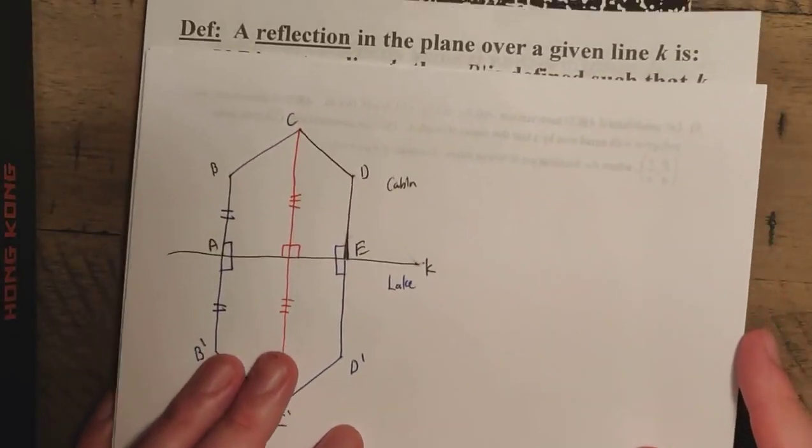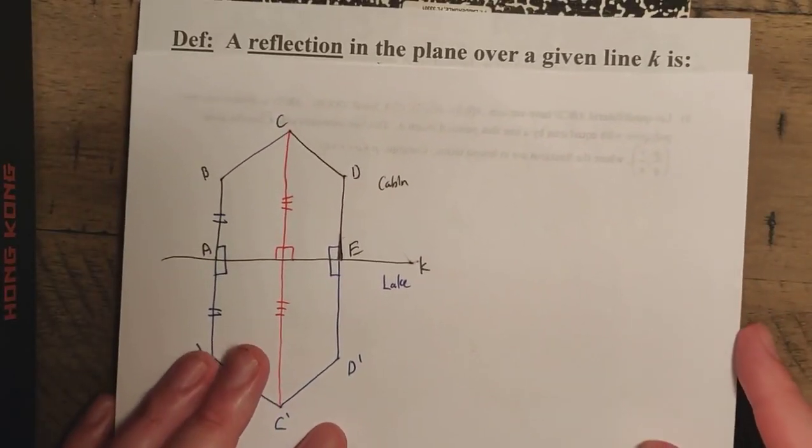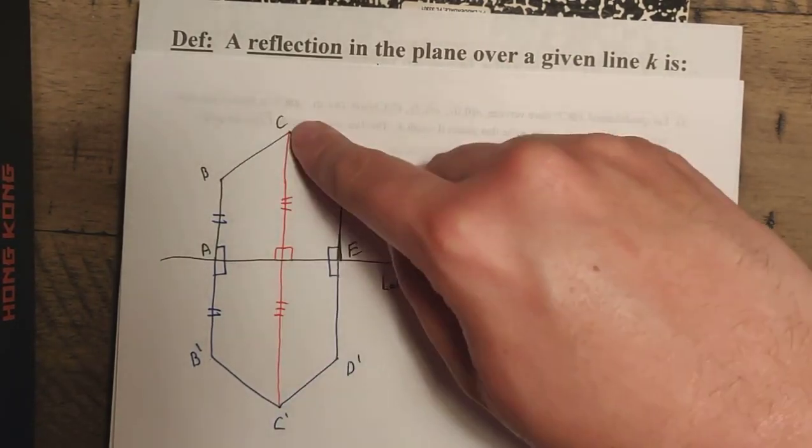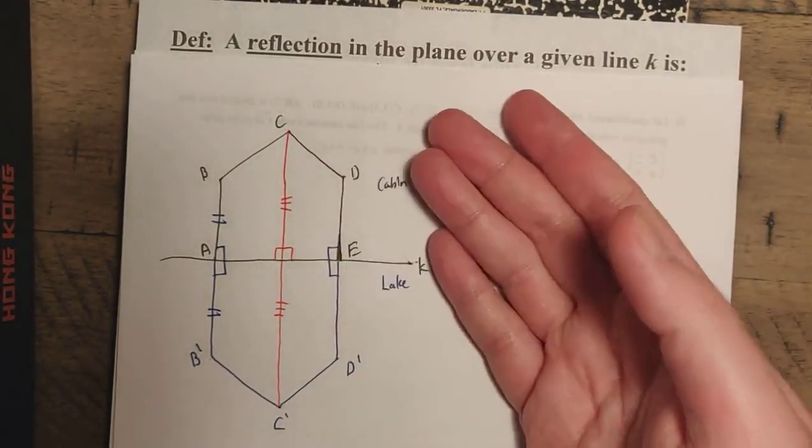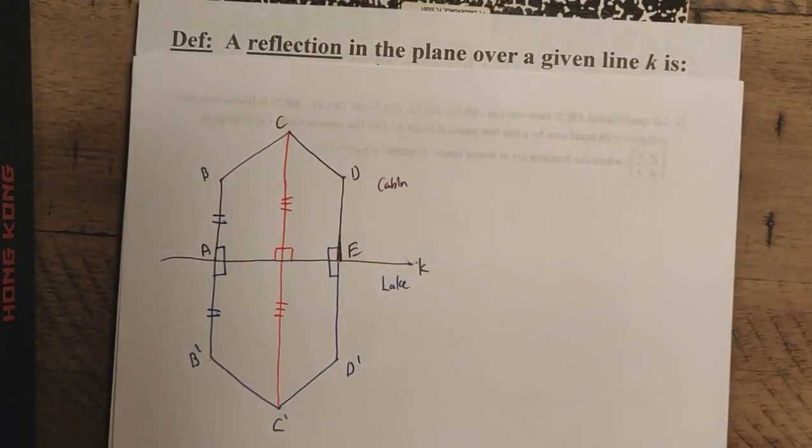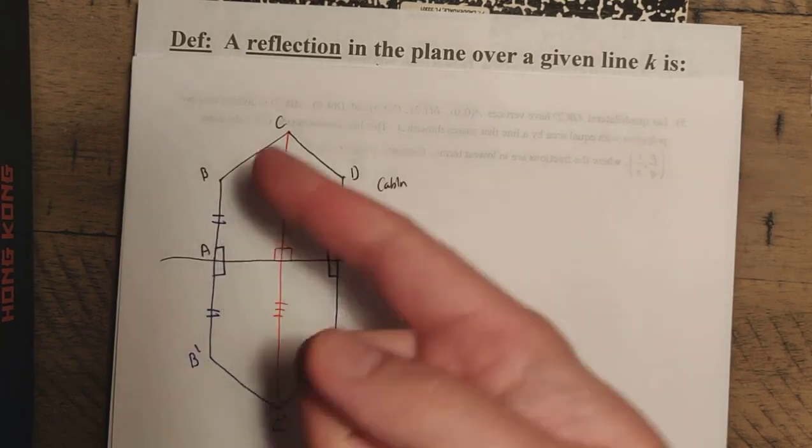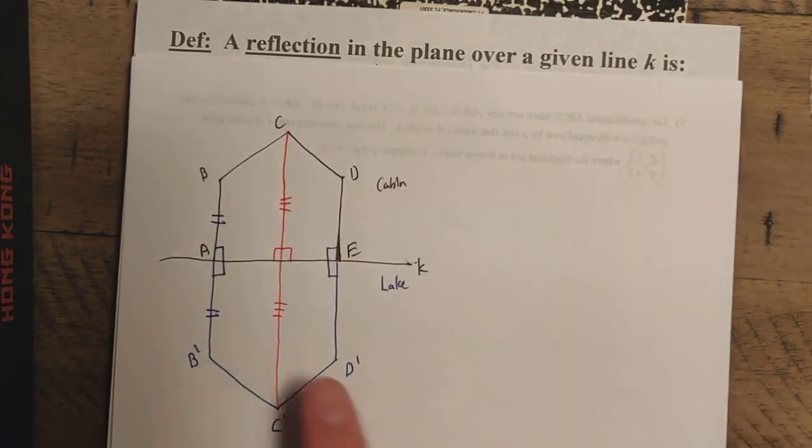So we can use this to define the concept of what is known as a reflection in the plane over a given line K here. We note that in this situation, as long as this point here is like this, we have something like this here where we have this perpendicular bisector business, and we're going to talk about that. Now, note that, unfortunately, this doesn't cover everything, right? It doesn't really cover B, C, and D, but it doesn't cover A and E.